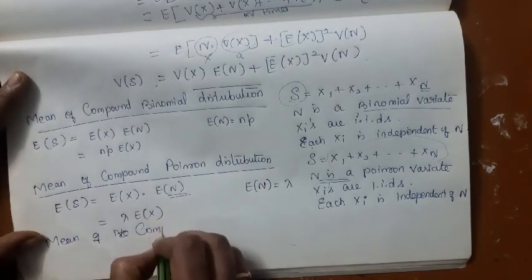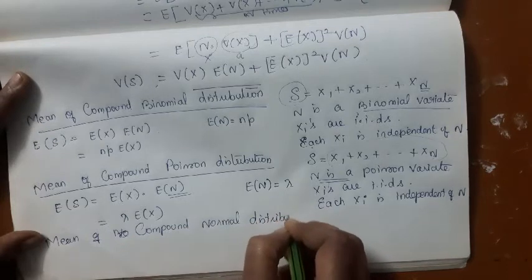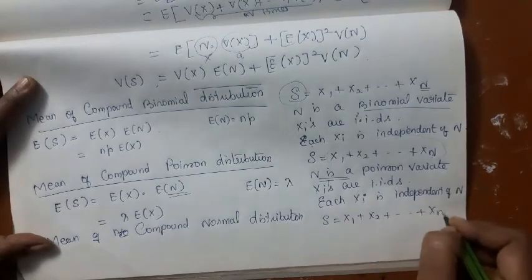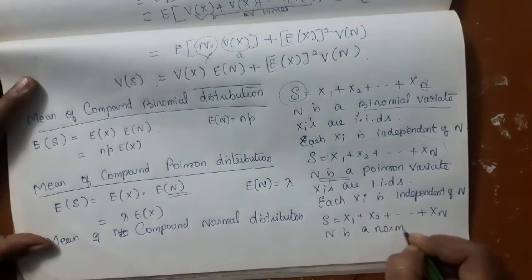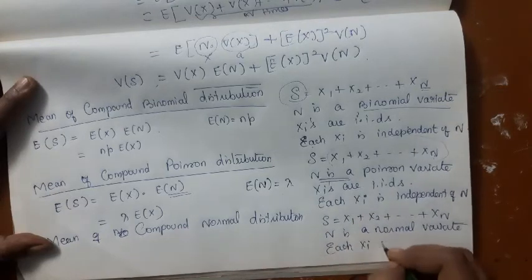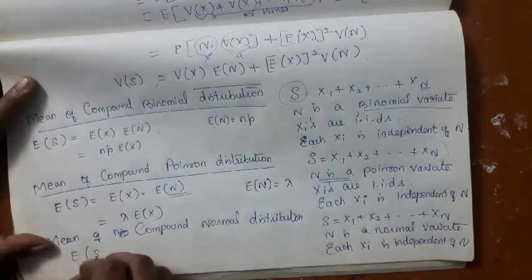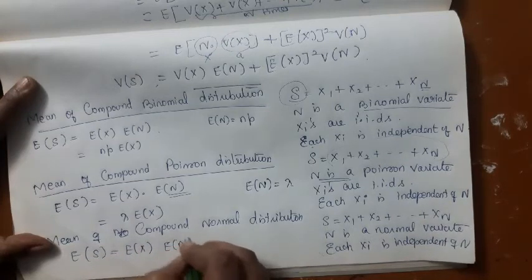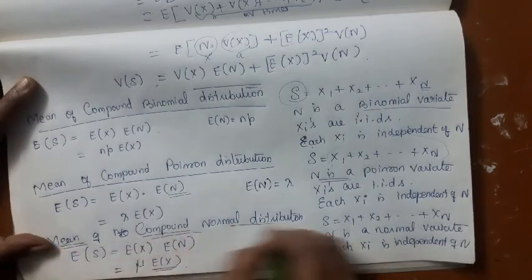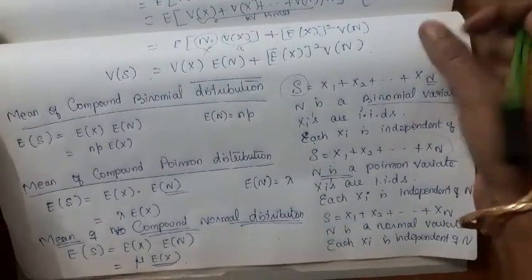For compound normal distribution, S is the sum of first N random variables where N is a normal variate with mean μ and variance σ², and each Xi is independent of N. So E[S] = E[X] · E[N] = μ · E[X]. We have derived the mean of compound binomial, Poisson, and normal distributions today. Thank you.